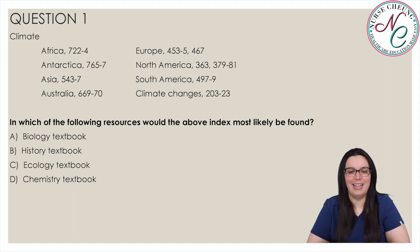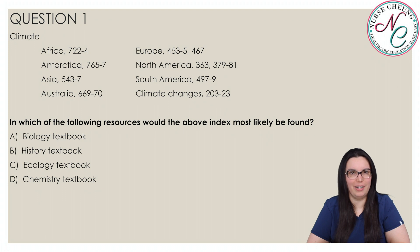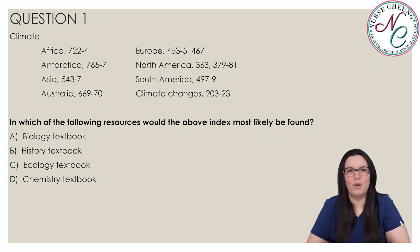Question one. Climate index entries: Africa 722-4, Antarctica 765-7, Asia 543-7, Australia 669-7 and 39-70, Europe 453-5 and 467, North America 363 and 379-81, South America 497-9, Climate Changes 203-23.